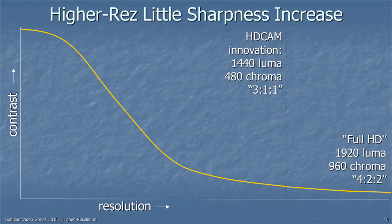When Sony introduced HDcam, and they weren't sure they'd be able to record the full HD signal, they decided to lop off the highest resolution. They lopped off the luma at 1440 pixels per line instead of 1920, and the chroma at 480 pixels per line instead of 960 — making it roughly 3:1:1 instead of 4:2:2. You can see on this chart that there's a substantial loss in resolution, but very little loss of area under the MTF curve, and it's the area under the curve that determines sharpness. So there was very little loss of sharpness in HDcam.